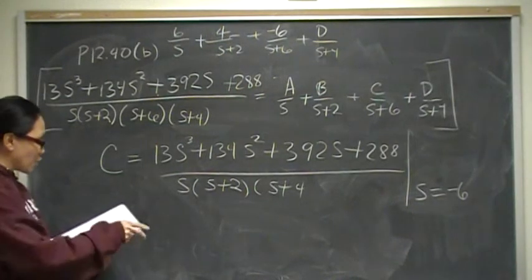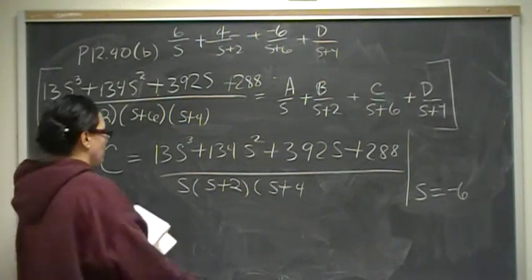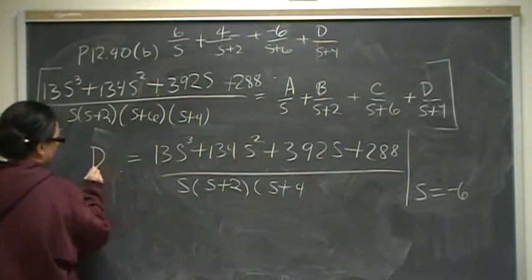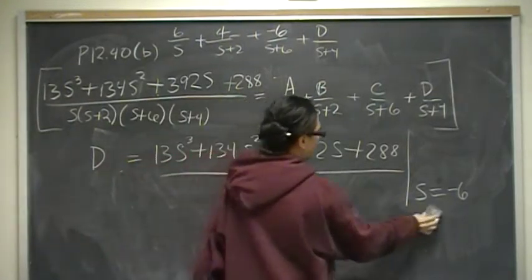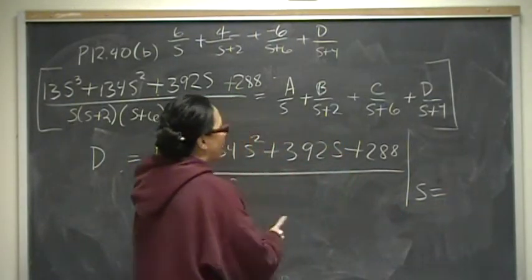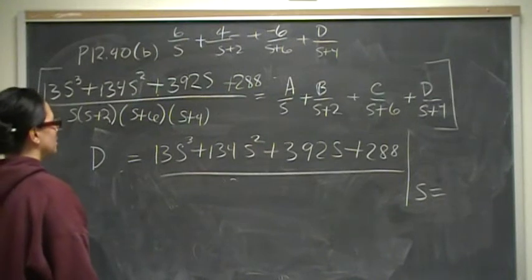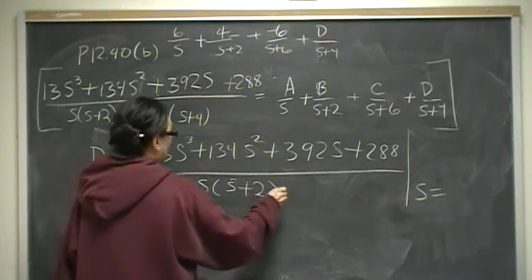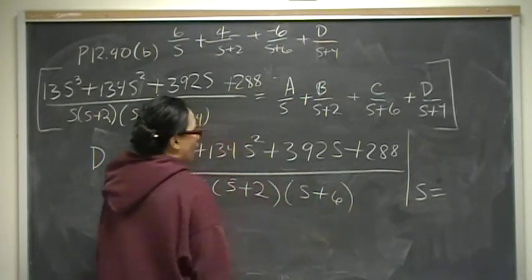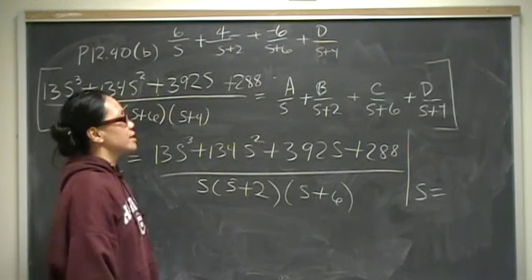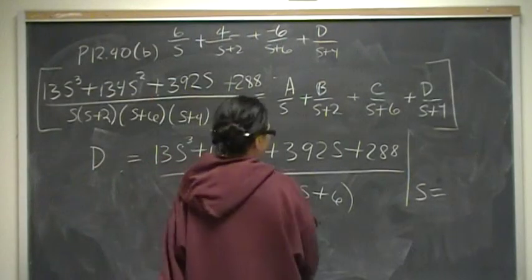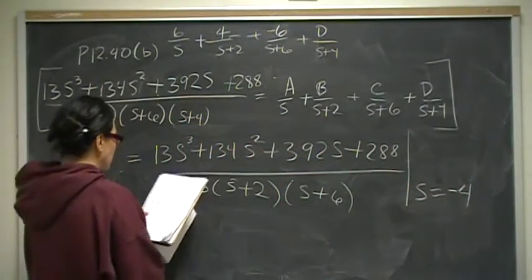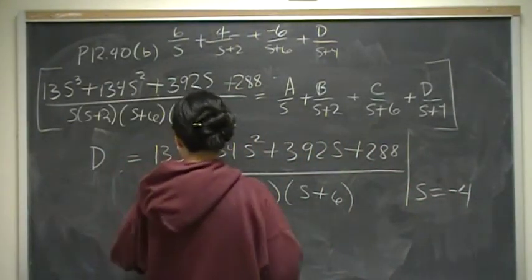Same thing for D. The numerator is the same; the denominator is everything except (S+4): that's S(S+2)(S+6). Evaluate at S = −4, and you will find that D = 2.